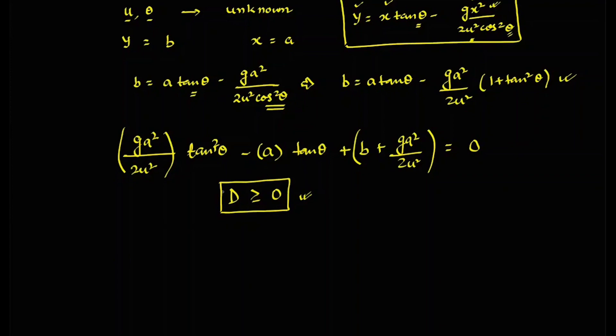So here the discriminant is A square minus 4 into GA square by 2U square multiplied by B plus GA square by 2U square. And this is greater than or equal to zero. Now I am not going to solve this question further.